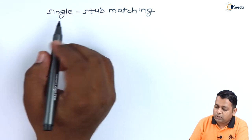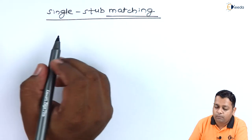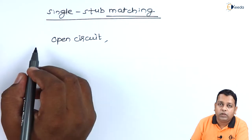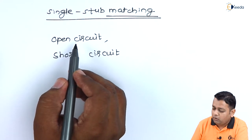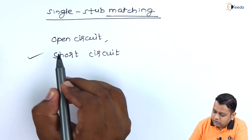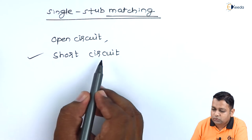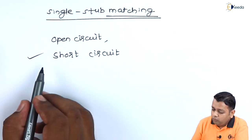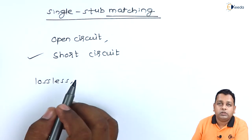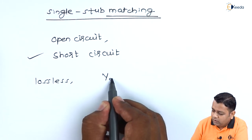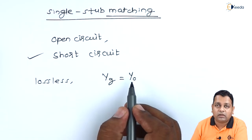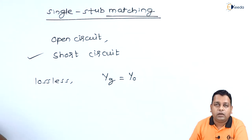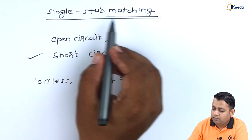Now we address single stub matching specifically. For matching purposes, instead of using an open circuit condition, we prefer the short circuit condition because obtaining an ideal short circuit is easier than an ideal open circuit. For the lossless condition, we use admittance values: Y_g equals Y_0, where Y_0 is the characteristic admittance of the transmission line and Y_g is the admittance of the generator.